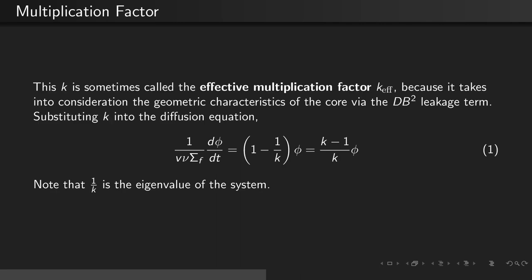Substituting k back into the diffusion equation, we see that the right-hand side becomes 1 minus 1 over k times the flux, or k minus 1 divided by k times the flux.